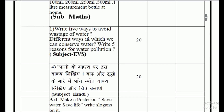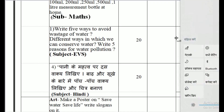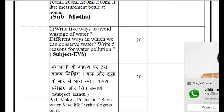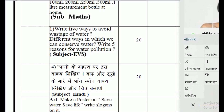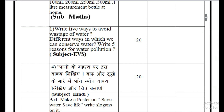For EVS, write five ways to avoid wastage of water, and on the next page write different ways in which we can conserve water. You can take photographs or draw pictures to illustrate these. Another question is: write five reasons for water pollution — what are the five reasons responsible for water pollution. You can also paste pictures related to those activities.